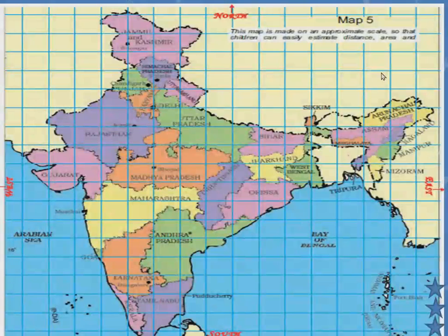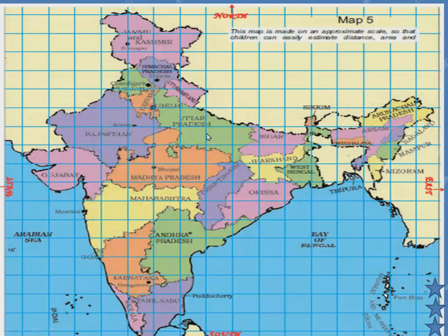Before going into the map, you have to know your directions. This is the north direction. Which state is towards the north? Jammu and Kashmir. And exactly opposite to it is south. When you face north, your right-hand side is the east direction, and opposite to that is the west direction.